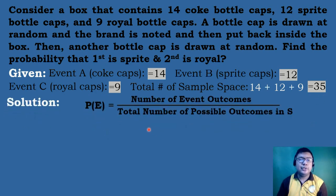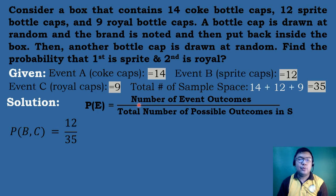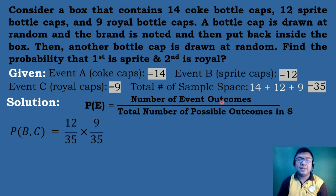For the solution, we will use the formula of simple probability and get the probability of event B followed by event C. We multiply the probability of B, which is getting a Sprite bottle cup, by the probability of getting a Royal bottle cup. The number of event outcomes for Sprite is 12 over 35, times the number of event outcomes for Royal, which is 9 over 35.